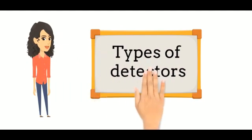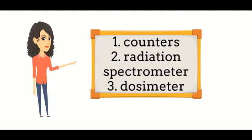There are three main types of detectors: 1. Counter, 2. Radiation spectrometer, 3. Dosimeter.